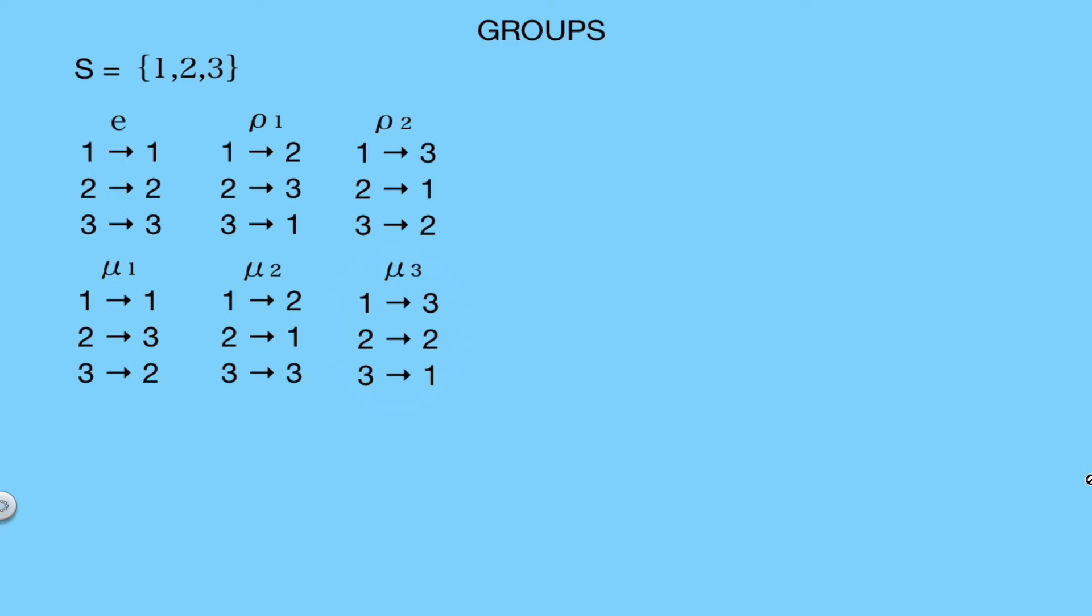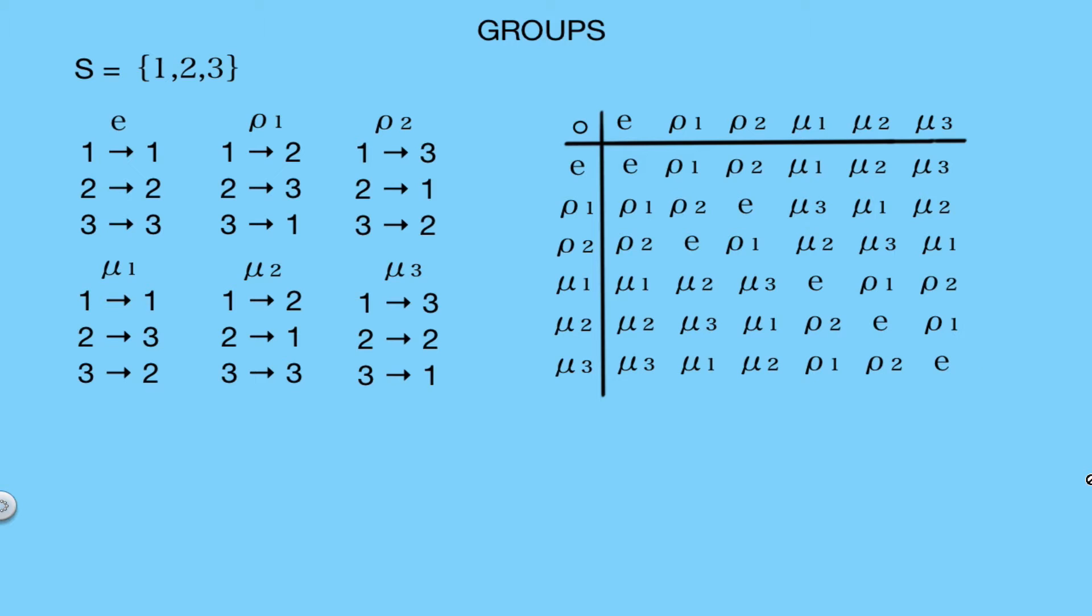This table shows all the different possible outcomes when we combine different permutations using the composition operation. From this table, you can see that the set of permutations is closed under the composition operation, because if you take any two permutations, when you compose them, you end up with another element of the set. And you can see that because every element listed in this table is an element of our original set.